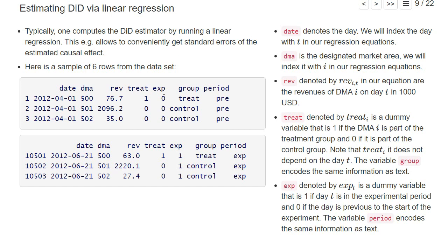'Exp' is a dummy that indicates the time period — it's zero if this day is before the experiment has taken place, and exp is equal to one if the day is during the experimental phase. So here the date is in June, and here the date is in April, which was before the experiment. We also have columns 'group' and 'period' that decode the same information as treat and exp, just as strings. Those columns are nicer for producing graphs, while for the regression these dummy variable columns are easier to work with.